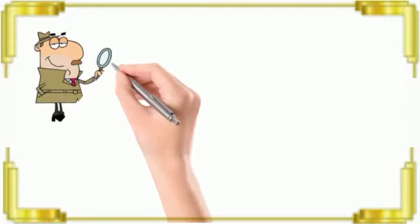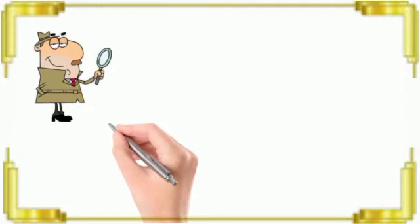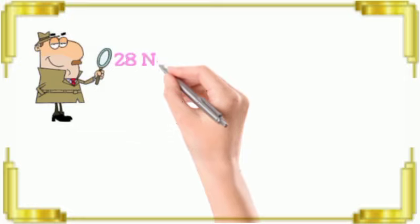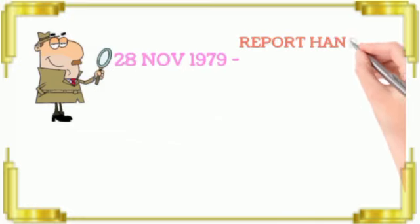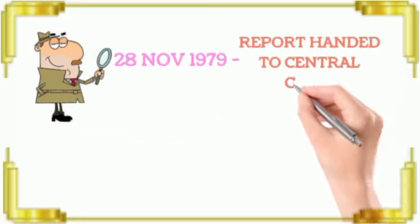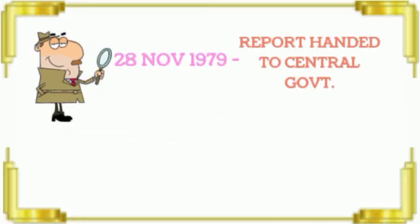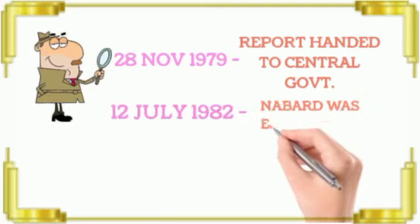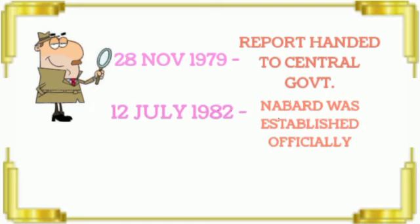What did the committee do? The committee submitted its report on 28 November 1979. Based on this report, the Central Government established NABARD on 12 July 1982.